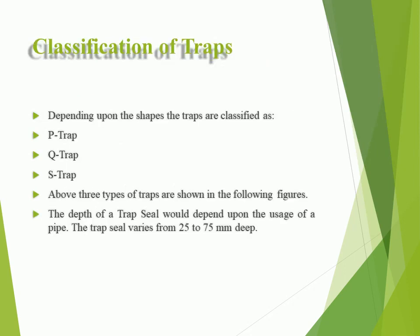Classification of traps: depending upon their shapes, traps are classified as P-trap, Q-trap, and S-trap. These three types of traps are shown in the following figures. The depth of a trap seal depends upon the usage of the pipe. The trap seal varies from 25 to 75 mm deep.